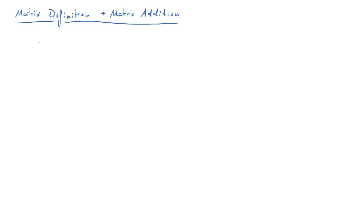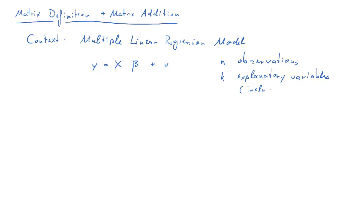In this clip we're going to talk about matrix notation and matrix addition. Recall that the context is a multiple linear regression model y equals x beta plus u, where we have n observations and k explanatory variables. So that x matrix has k columns, and if there's a constant, that is included in that k, so that may often be the first column of x.